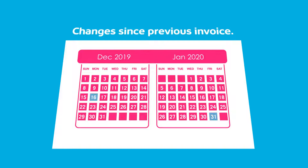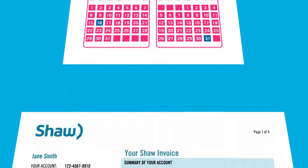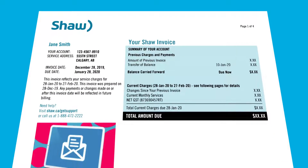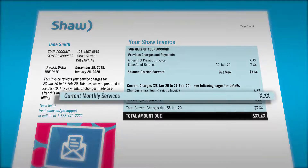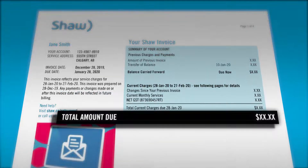Here, you'll find partial charges for your Shaw services, from the date you made changes to your account until the end of your current billing cycle. You may also find adjusted charges for package changes and/or upgrades. You'll then see a full month of services under Current Monthly Services. Your new total amount due will be highlighted at the bottom, here.